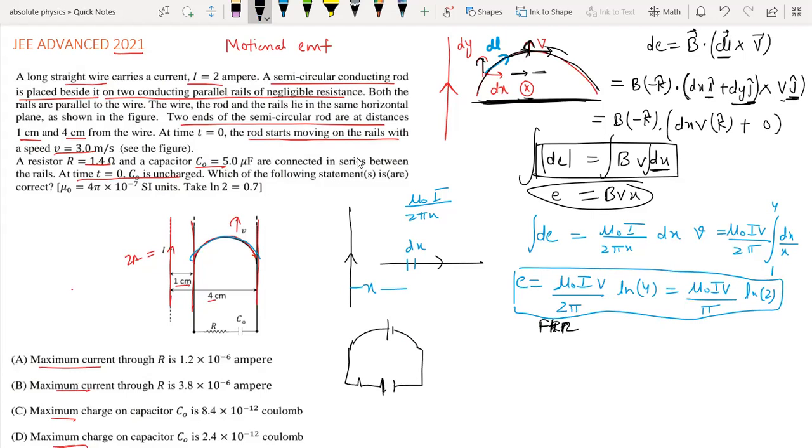The maximum current occurs at t=0 when the capacitor acts as a short circuit.